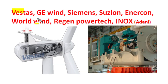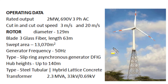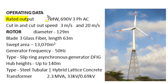Vestas, General Electric Wind, Siemens, Suzlon, Enercon, World Wind, Reagan PowerTex, and Inox of the Adani Group are leading brands in wind turbine manufacturing all over the world and in India. A typical 2-megawatt power utility wind turbine made by Suzlon has the following technical specifications.